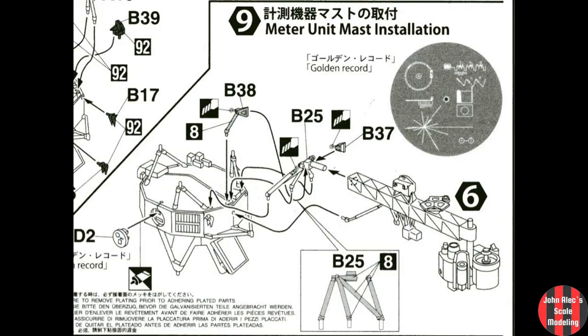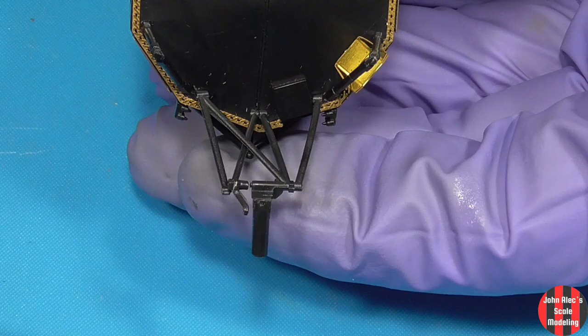Step 9, adding the frame now for the instrument mast, which I added later. This is the order I glued in the bracket pieces.